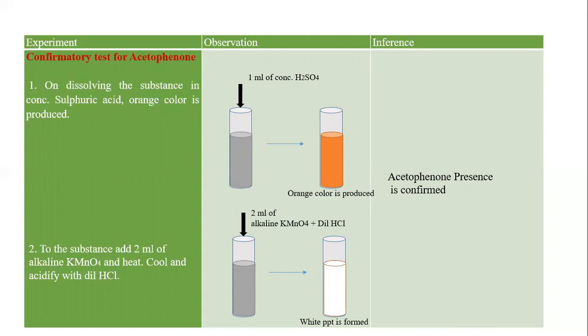After this video, you should be able to understand how to proceed during a qualitative analysis. If you know the confirmatory test, you can write the compound name. If you have no idea about the confirmatory test, you can write in the report that the presence of aldehydes or ketones has been found. But without a confirmatory test, you cannot write that it is acetophenone or benzophenone specifically. Thank you so much.